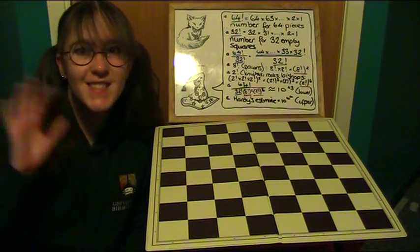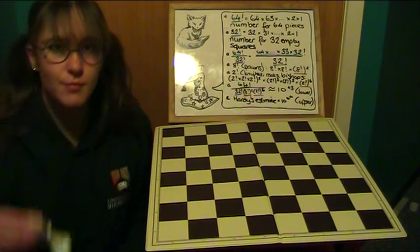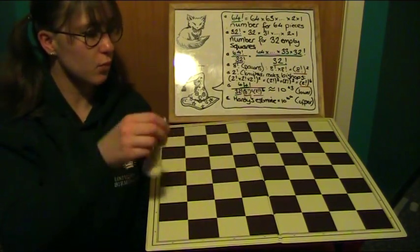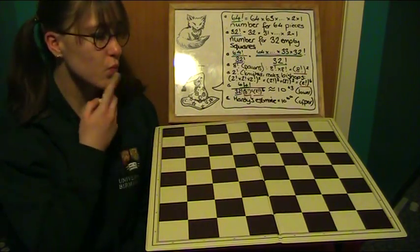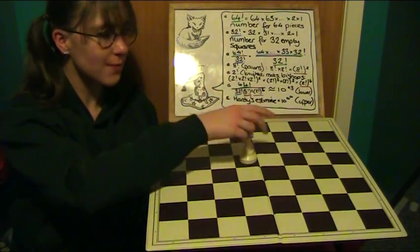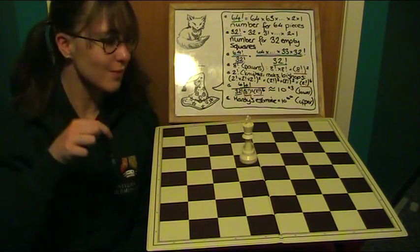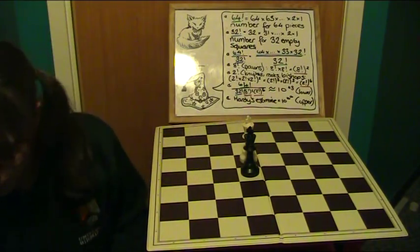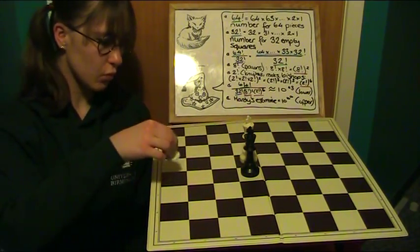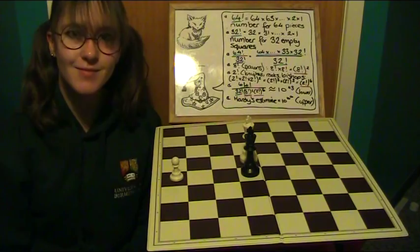Now we go over to Hat and his gorgeous assistant. Suppose we only have one chess piece. Then we can place it on any of the 64 squares on the board. So we place it here, say. The next piece can go on any of the remaining 63 squares. The third piece can go on any of the 62 which haven't already been taken up. And so on until we have none left.